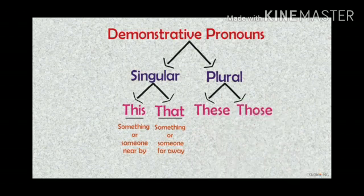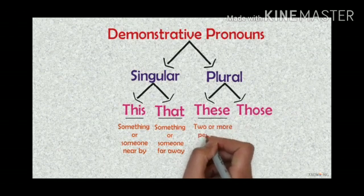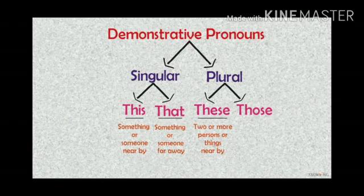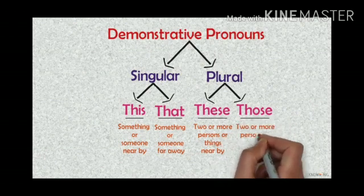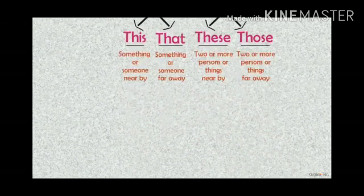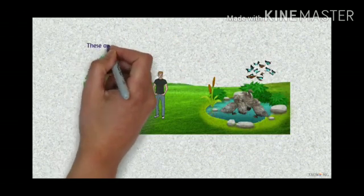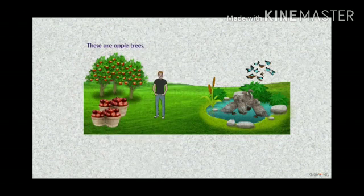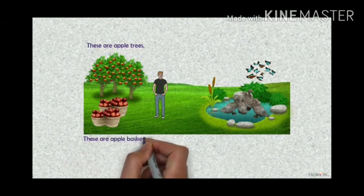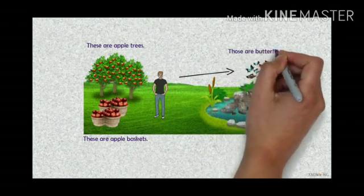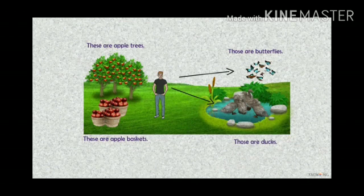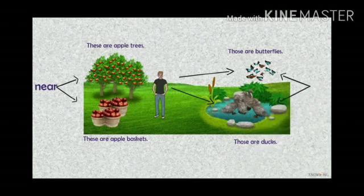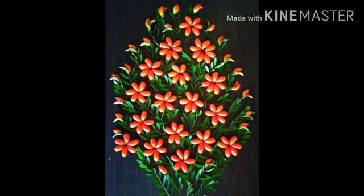These and those are plural. These is used for two or more persons or things nearby, and those is used for two or more persons or things far away. Look at these examples: these are apple trees, these are apple baskets — apple trees and apple baskets are nearby so we used 'these.' Those are butterflies, those are ducks — butterflies and ducks are far away so we used 'those.'